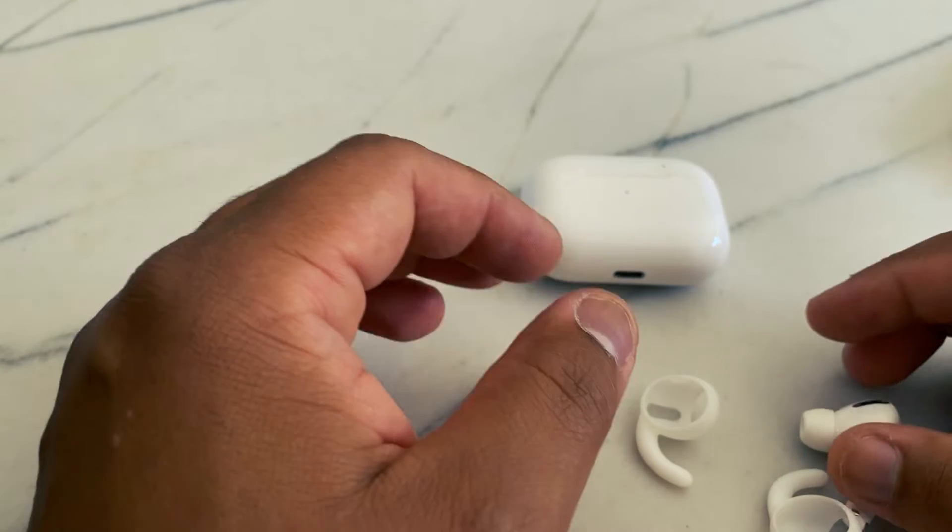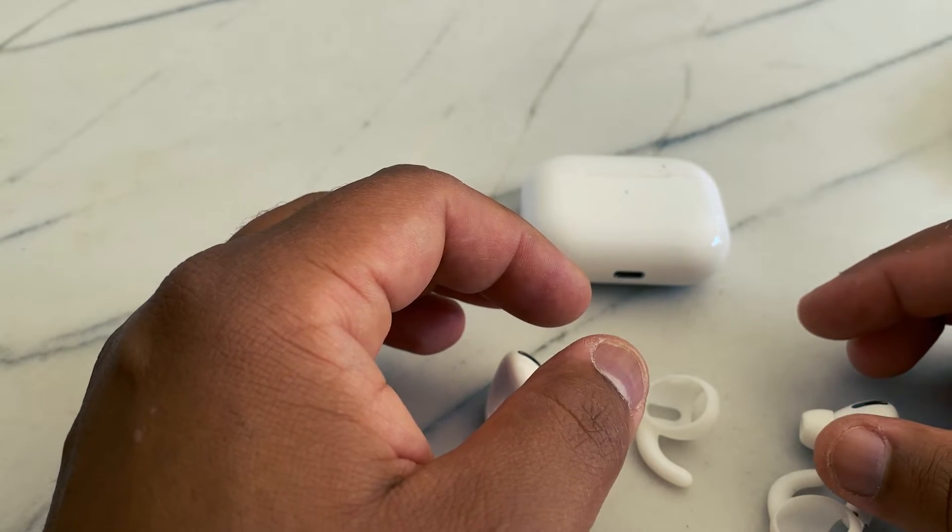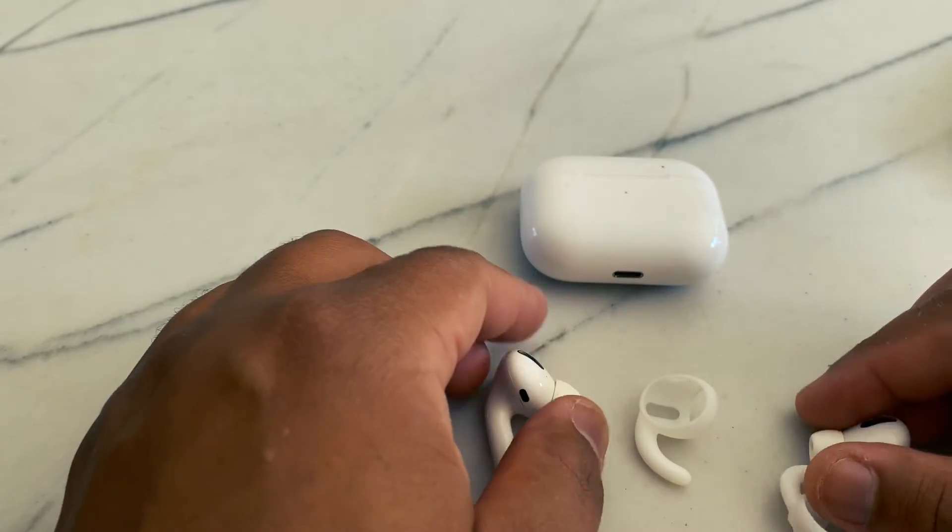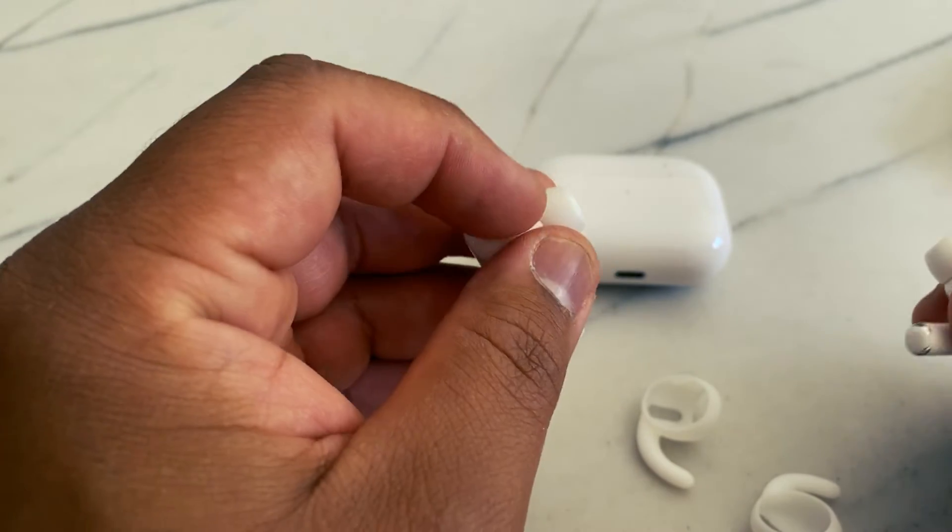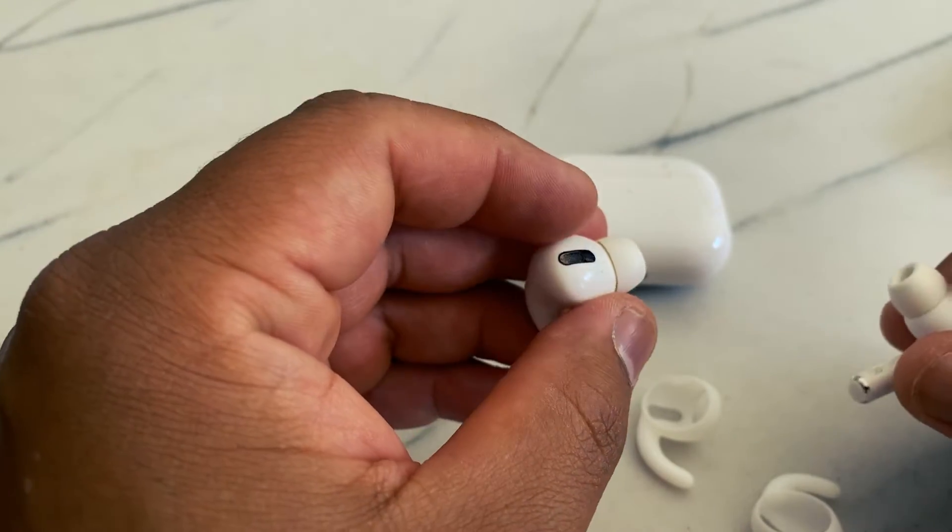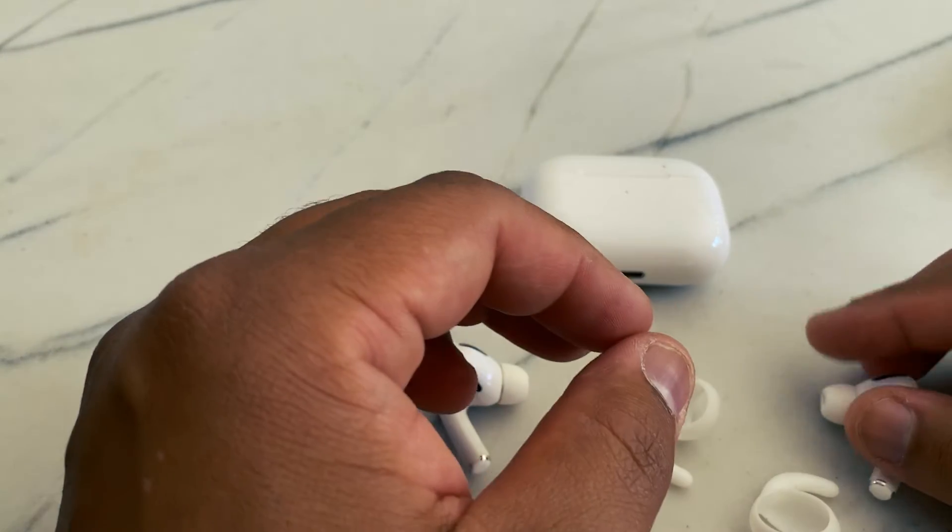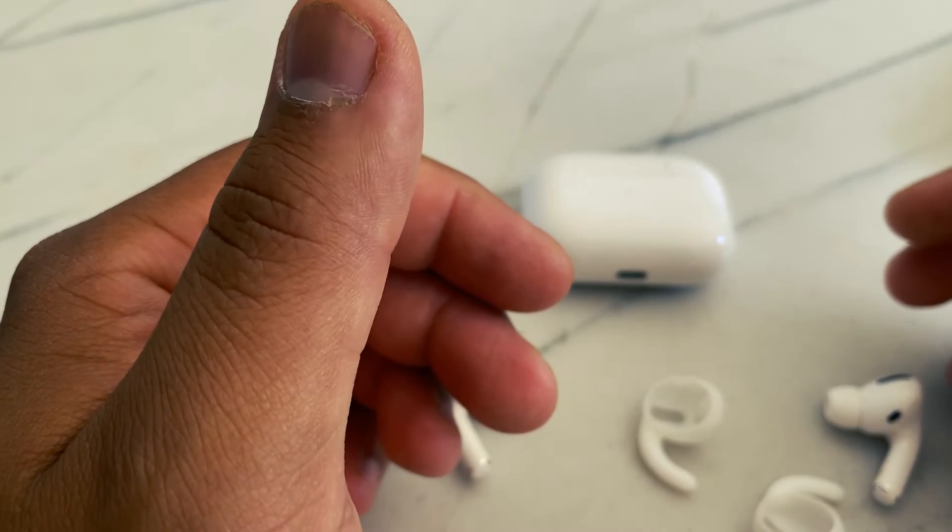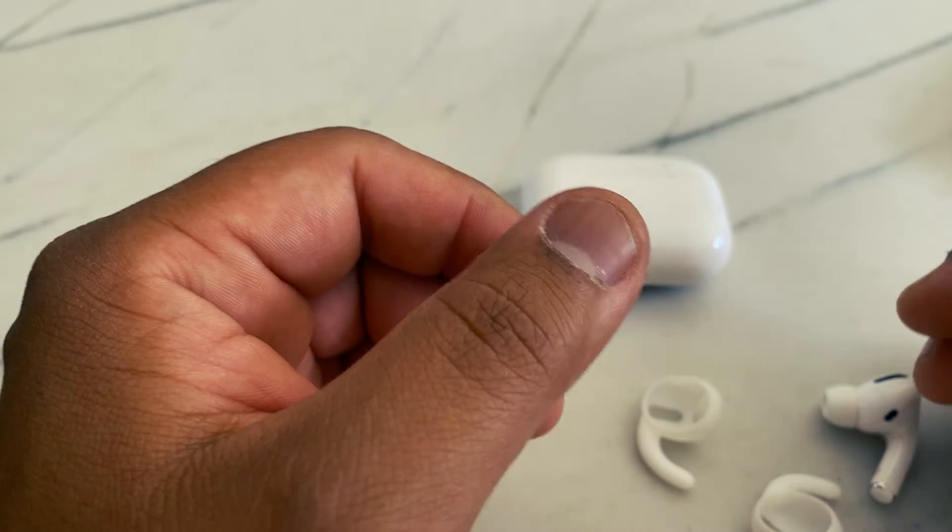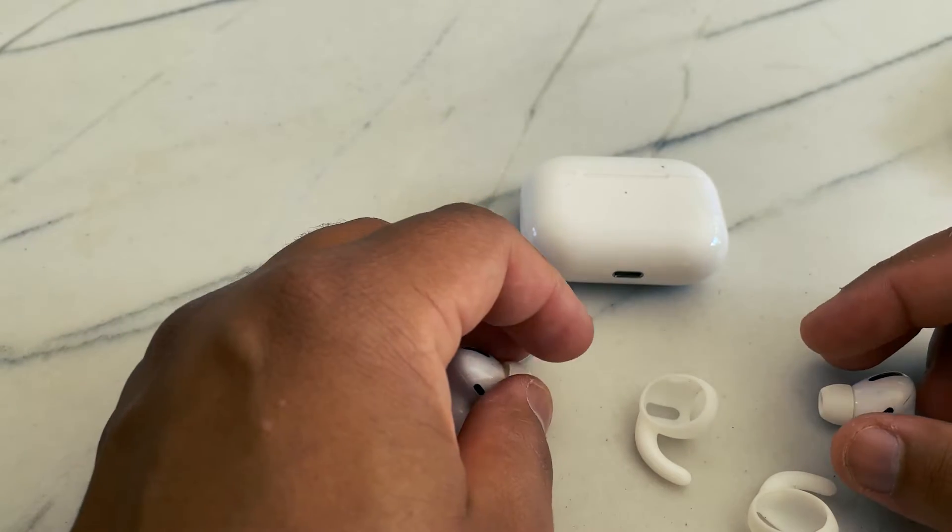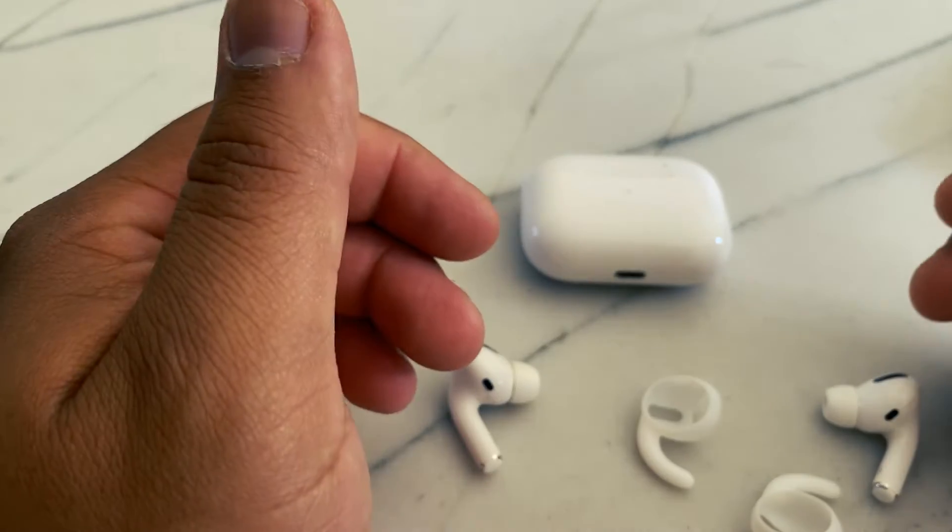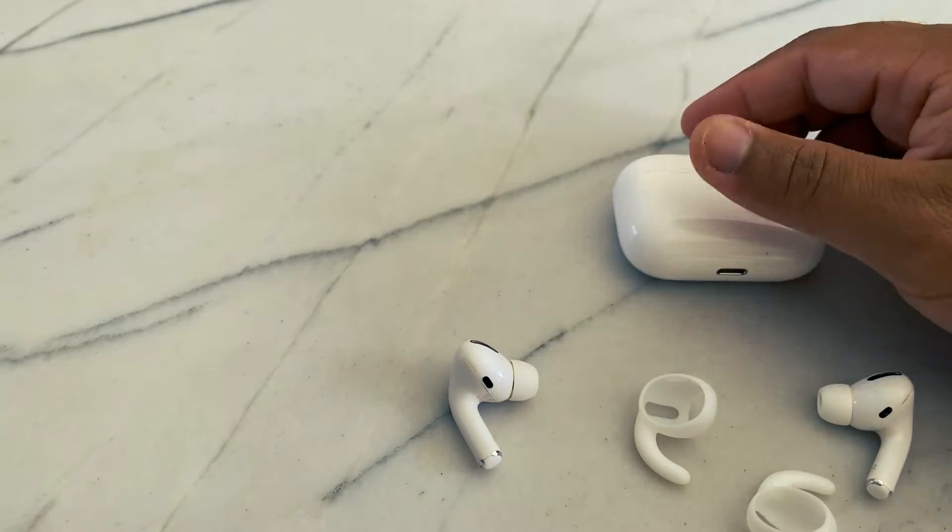The active noise cancellation is amazing when you are traveling because it blocks all the noise from the airplane. You have to be careful in traffic because this will block quite a substantial amount of sound. Which brings me to the other feature that is transparency mode, which actually allows you to hear your surroundings. So that's really cool.